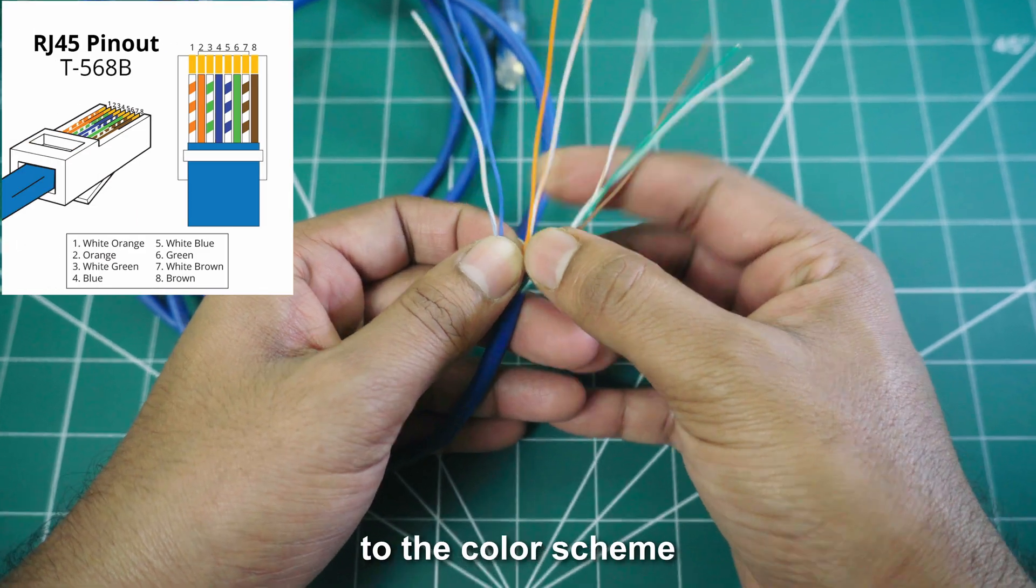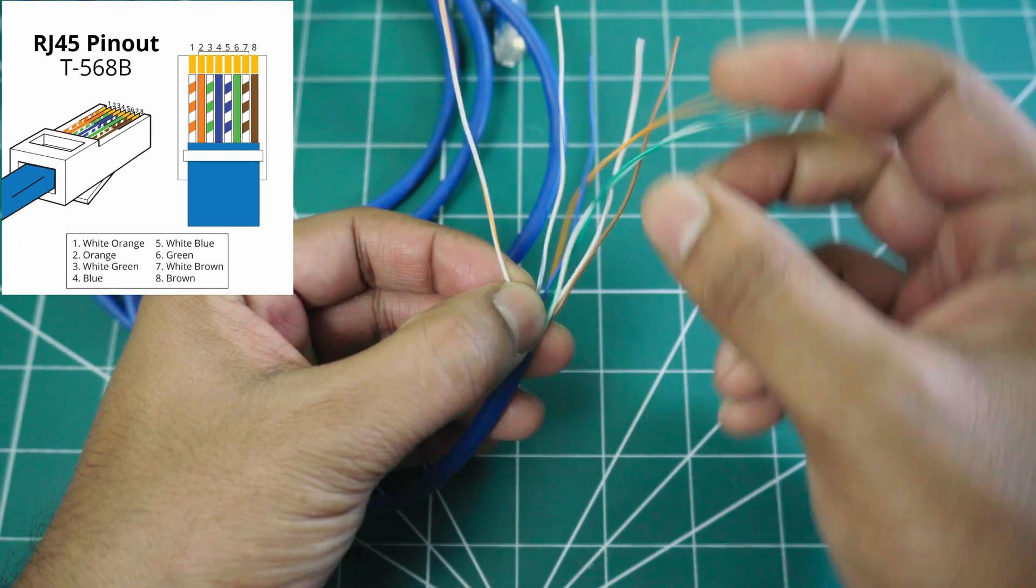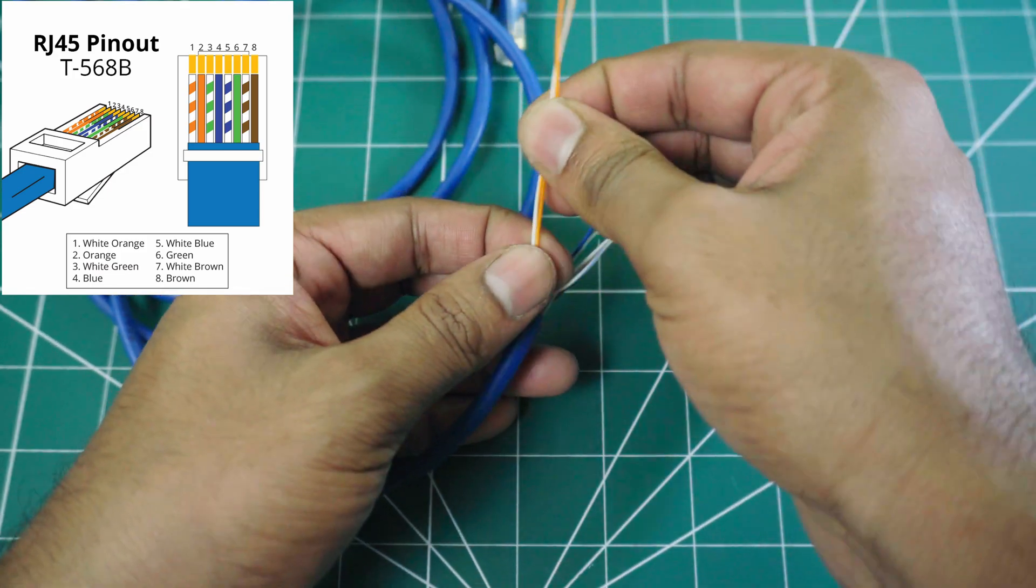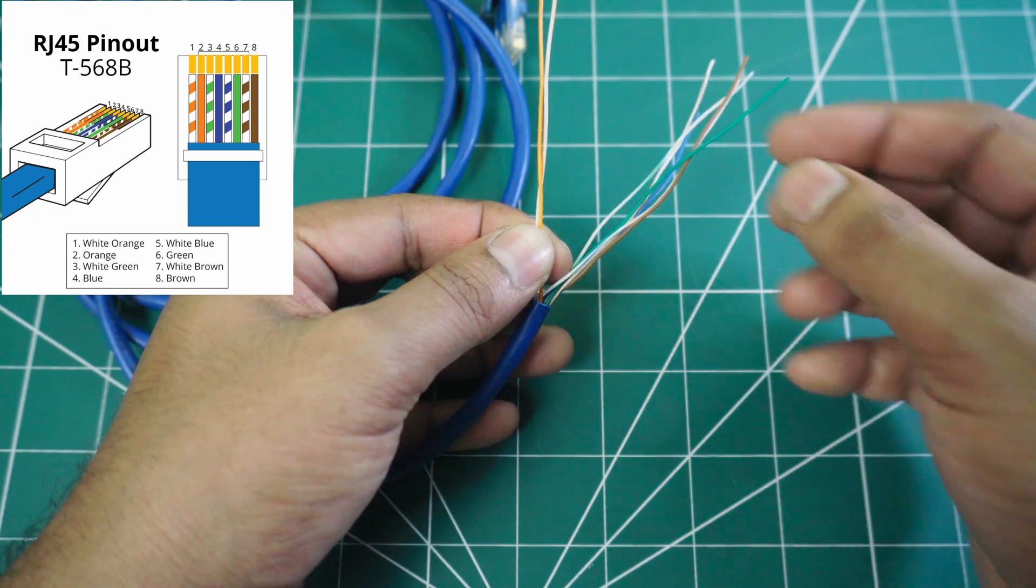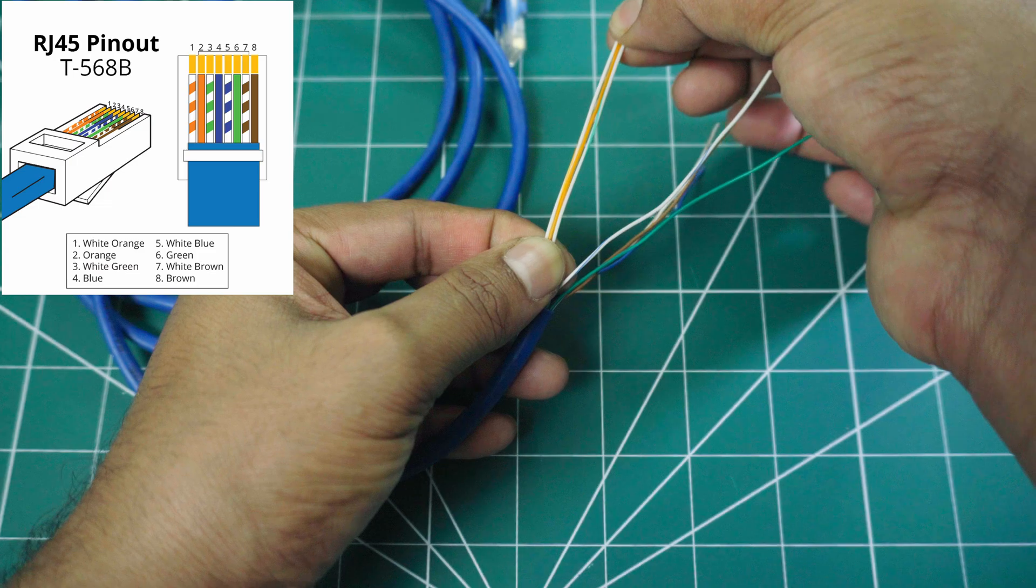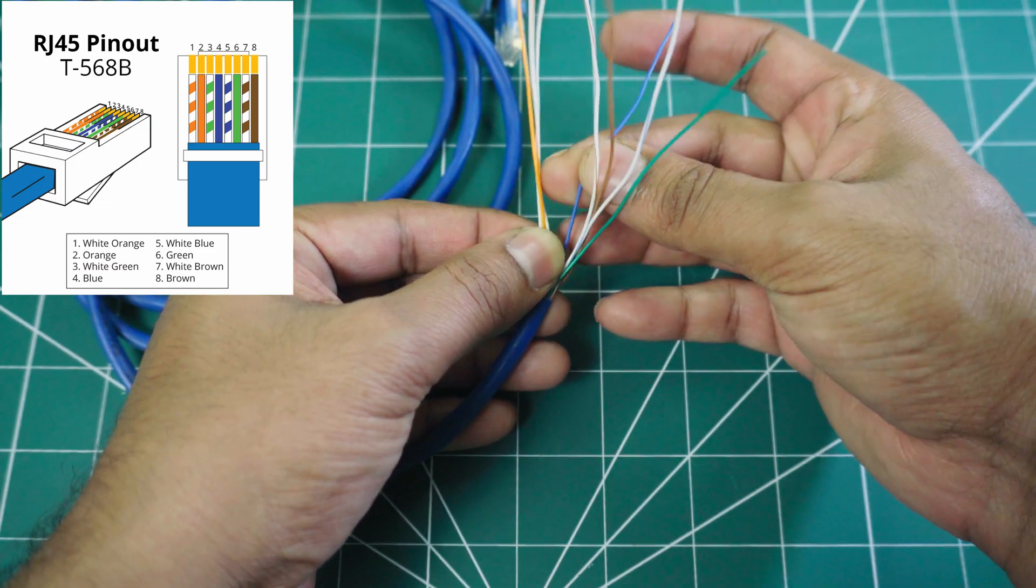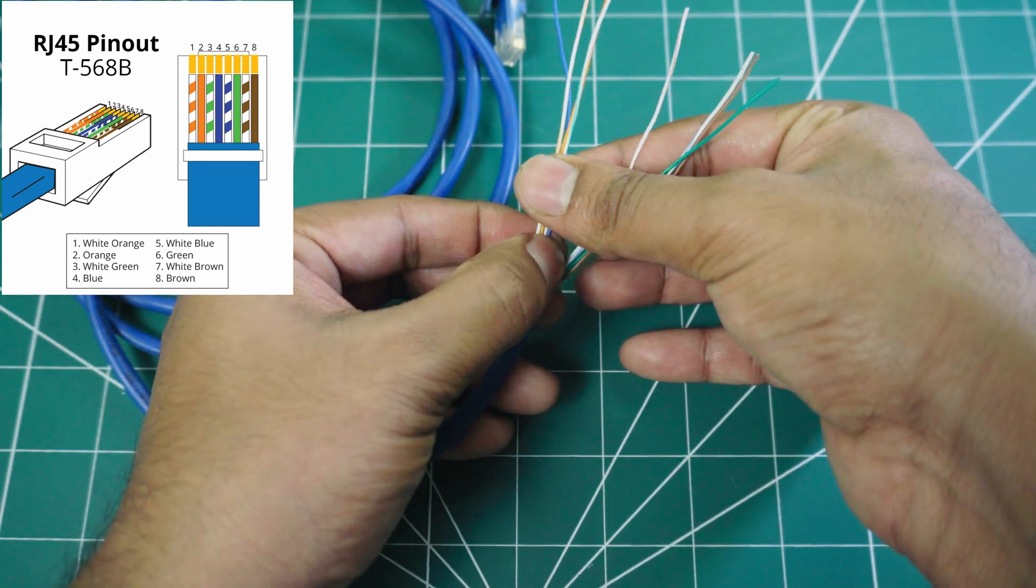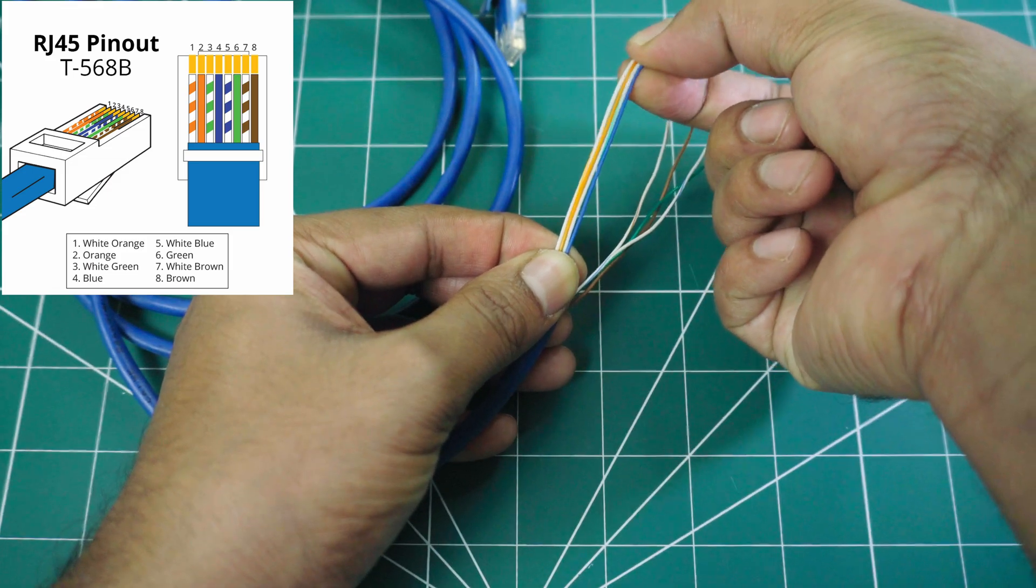Now, arrange the wires according to the color scheme shown in the image. Next, isolate the steel wires.